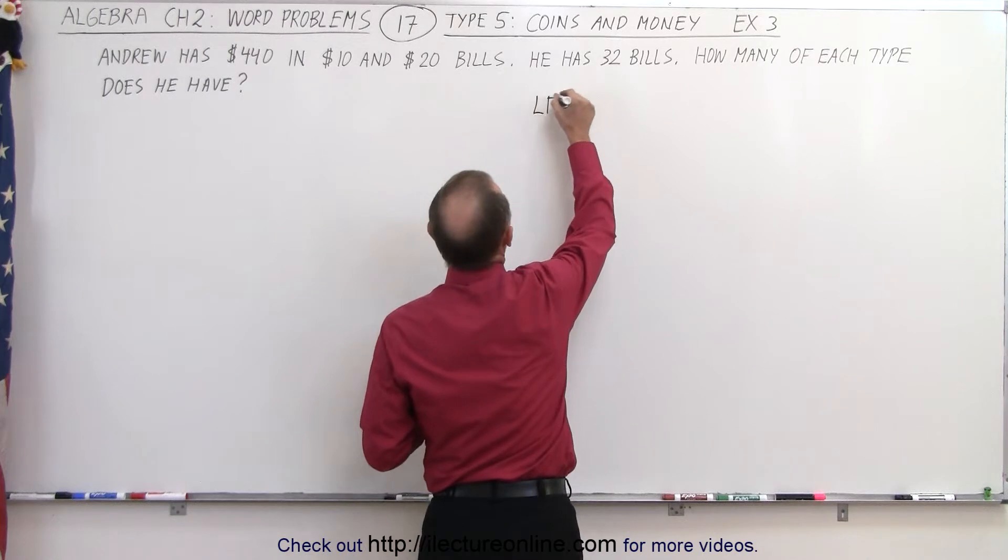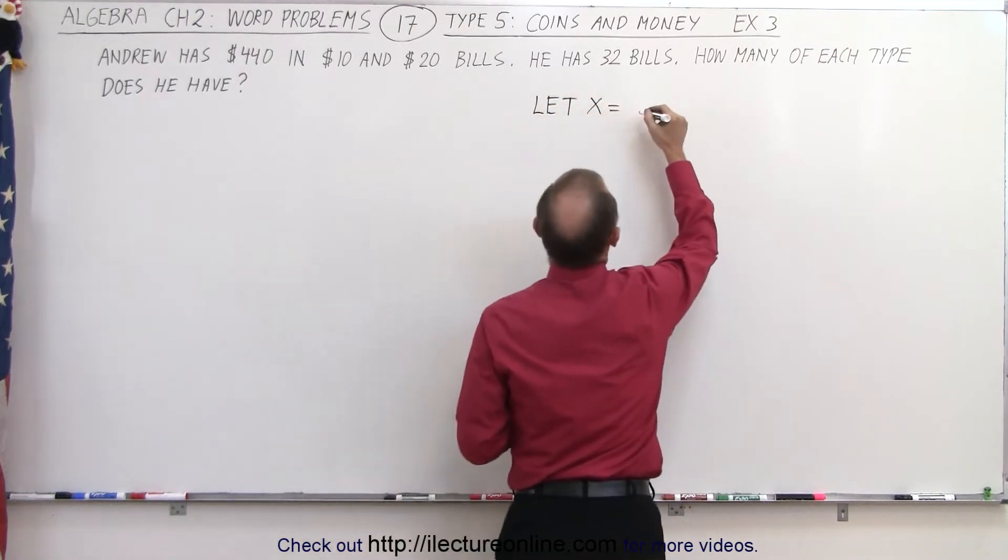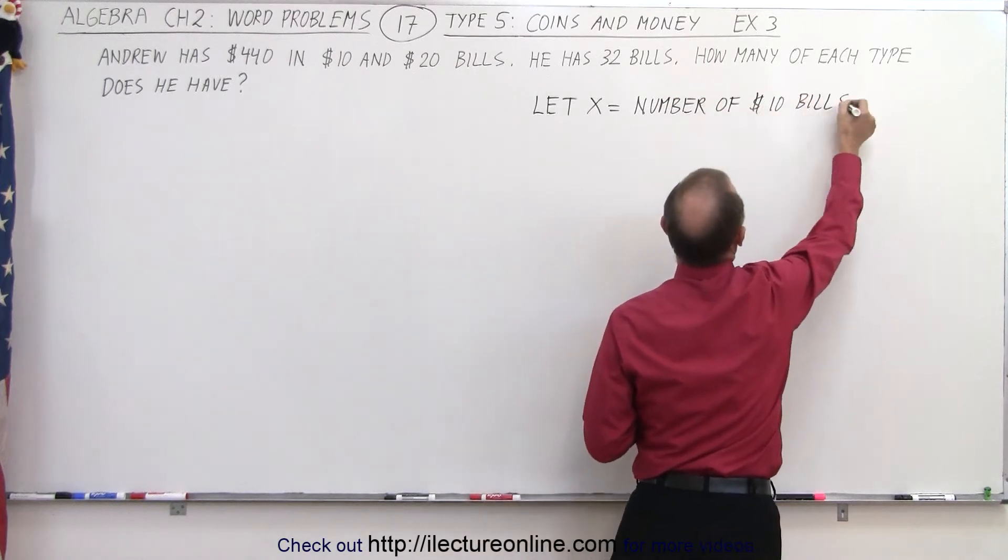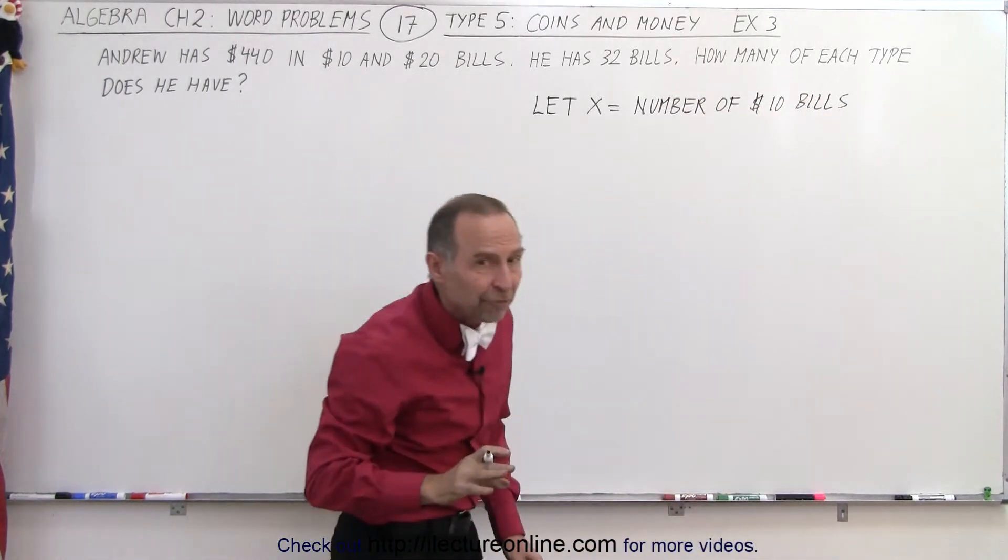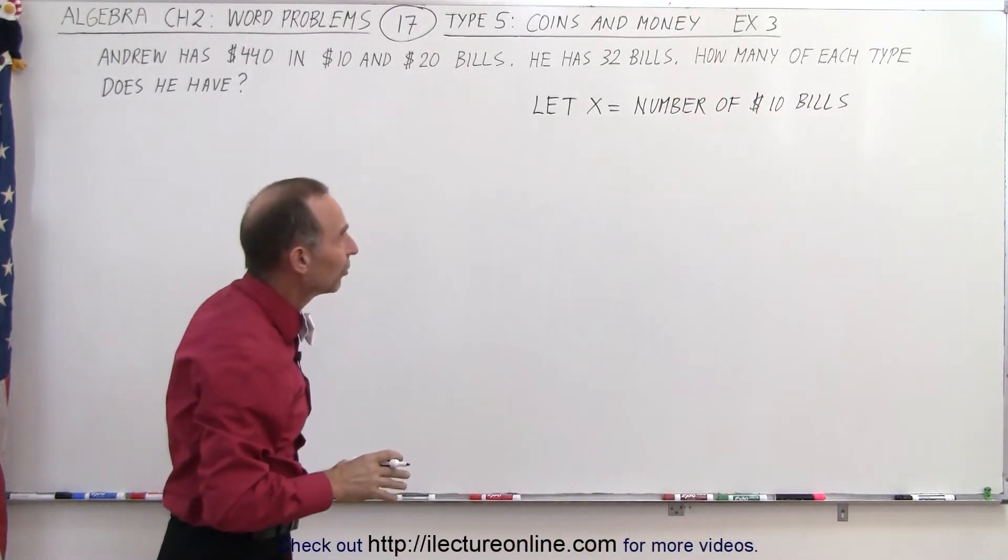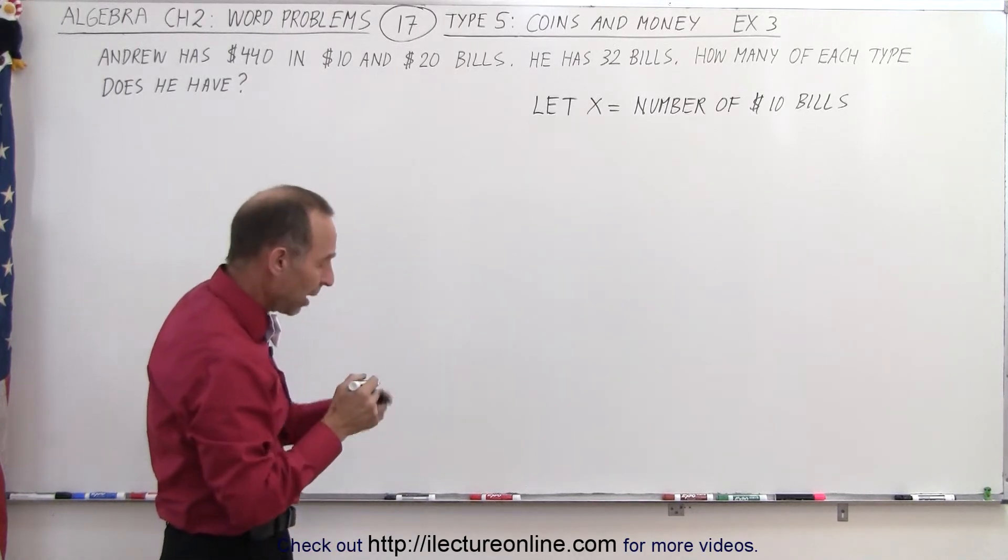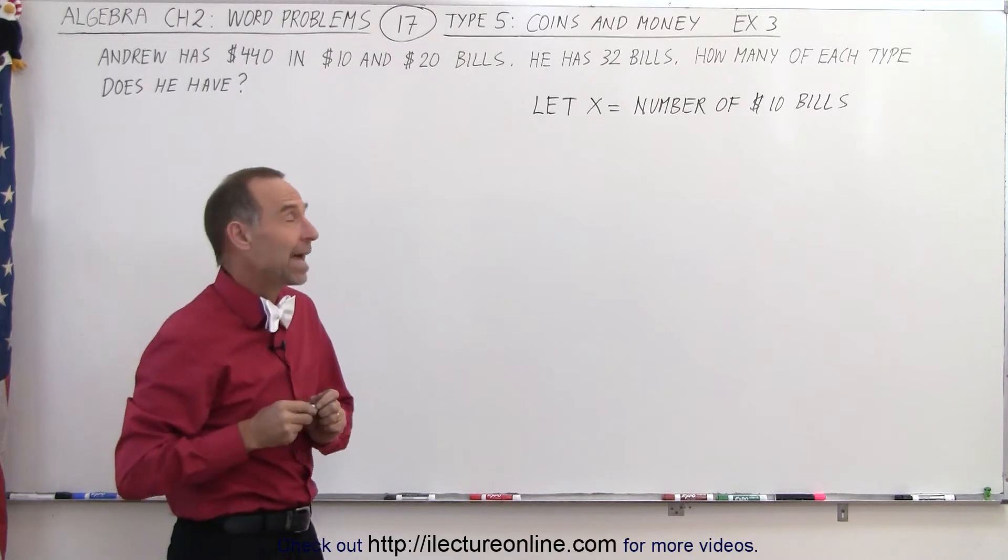So we're going to let x equal the number of $10 bills. Notice we don't let x equal the value of the $10 bills. We let x equal the number of the $10 bills, and that's very important. So how many of the $20 bills do we have?